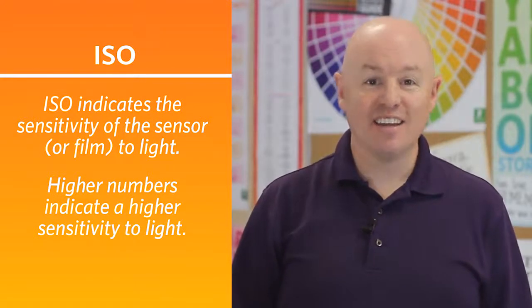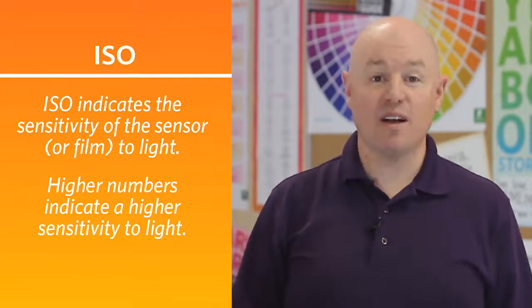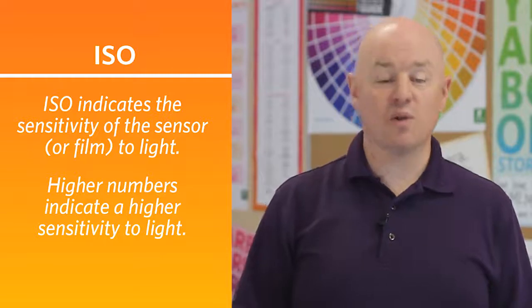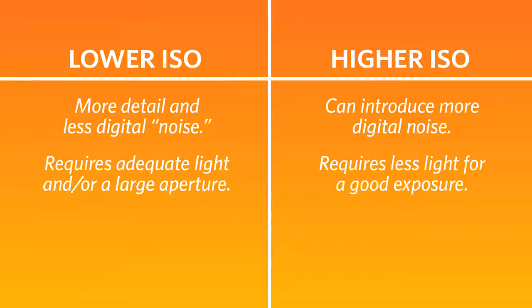The ISO setting tells us the sensitivity level of the sensor. This is controlled within the camera body. A lower ISO setting, such as 200, will give us a photo with much more detail, but it takes more light to expose the image. A higher ISO setting, such as 800 or 1600, will give us a better image in low-light situations, but we might lose some detail or see some noise within our photo.